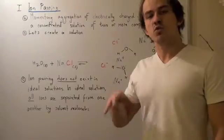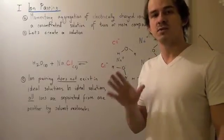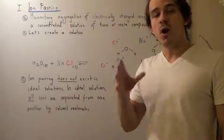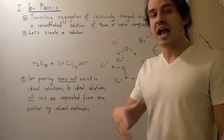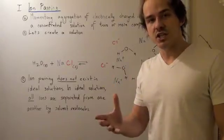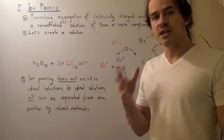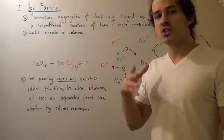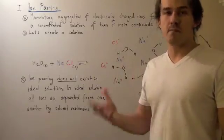In this lecture, I'm going to quickly talk about a concept called ion pairing. Ion pairing is the momentary aggregation of electrically charged ions found in a concentrated solution of two or more compounds.